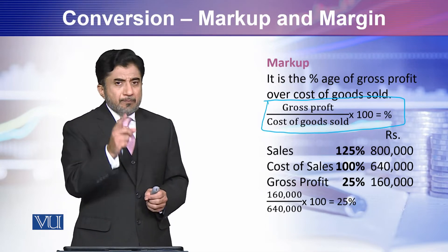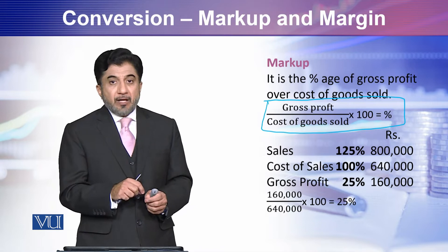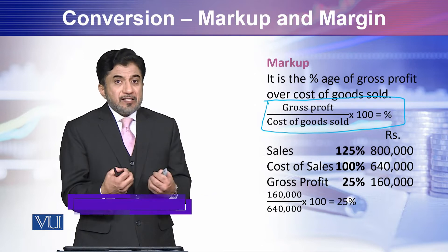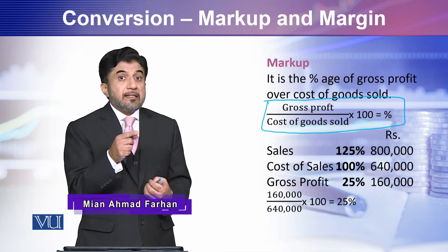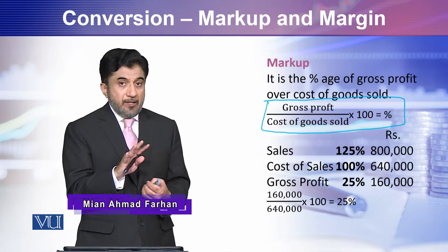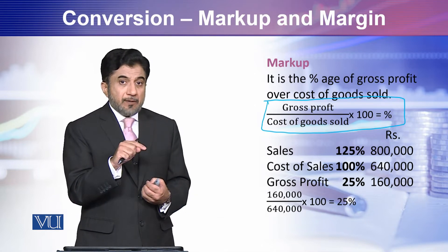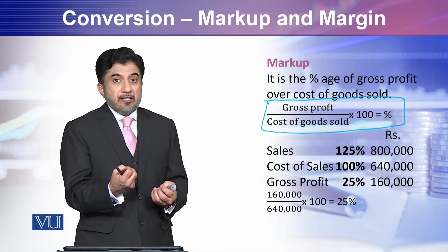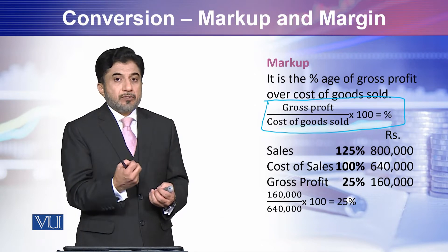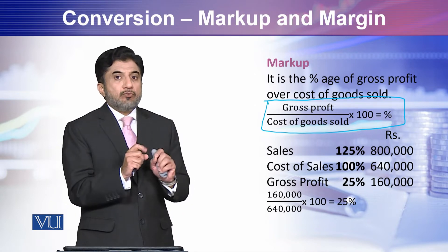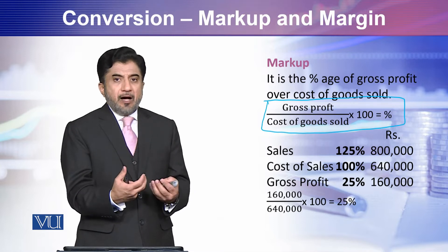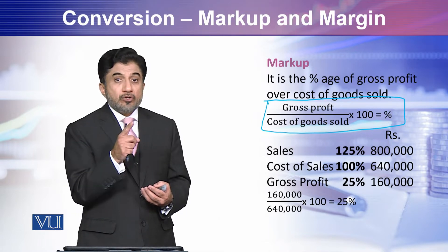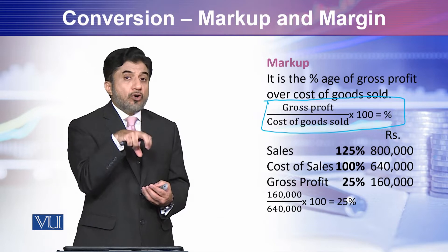A very important concept to learn at this point: the base is always equal to 100 percent. The cost of goods sold is the base in this formula. Therefore, the cost of goods sold would always be equal to 100 if we are calculating markup. Markup is used for calculating the percentage of gross profit on cost of goods sold.